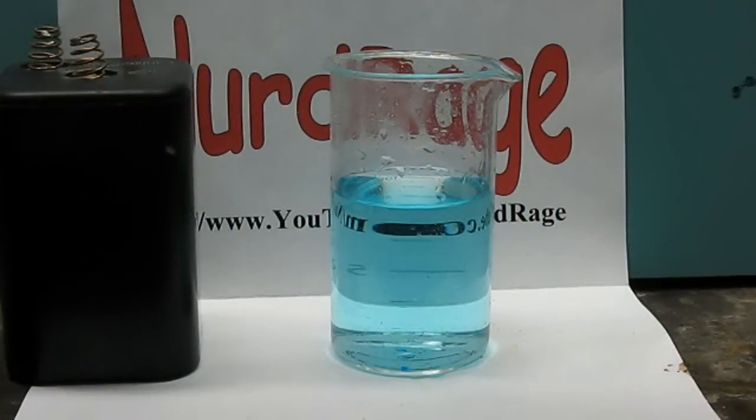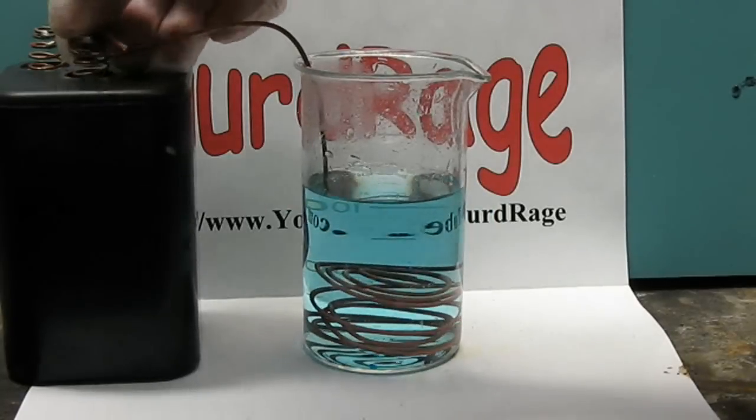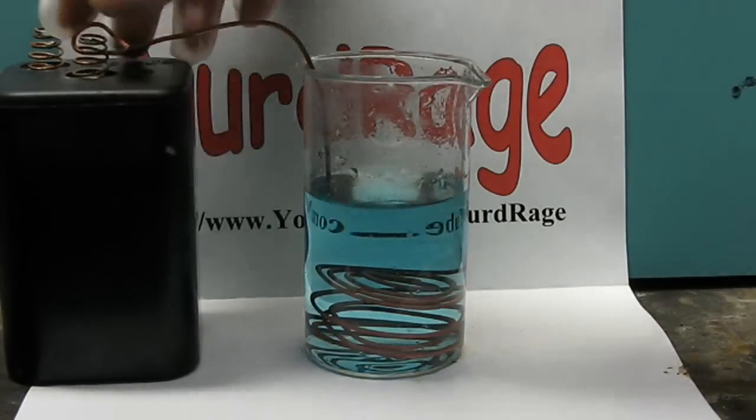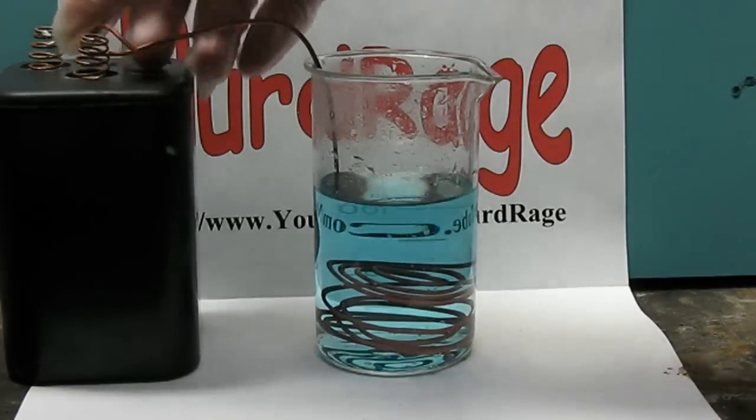Now make a solution of copper sulfate. The stronger the better. And place in the bottom a copper electrode. Attach the copper electrode to the negative terminal of your battery or power supply.